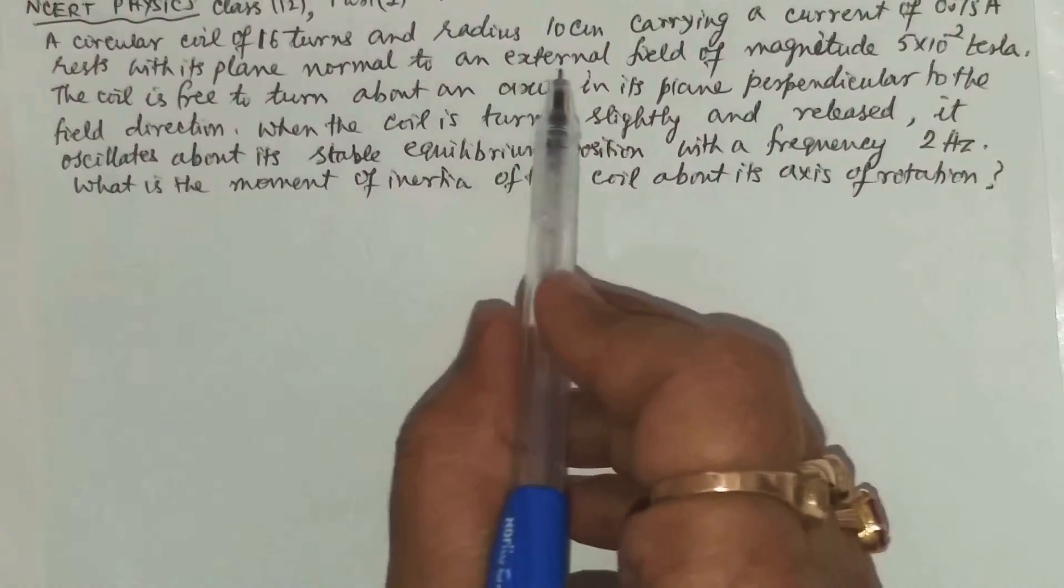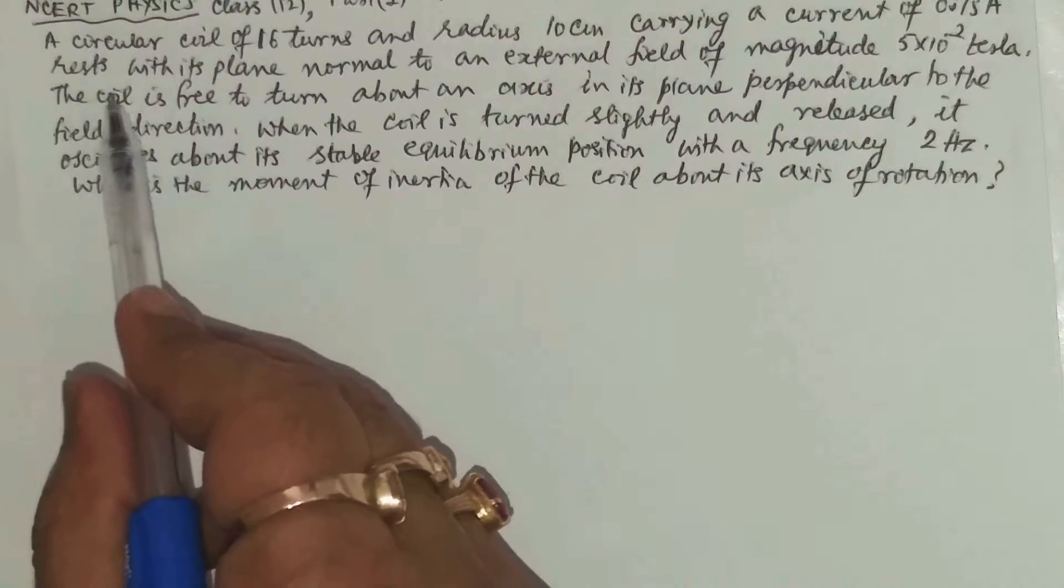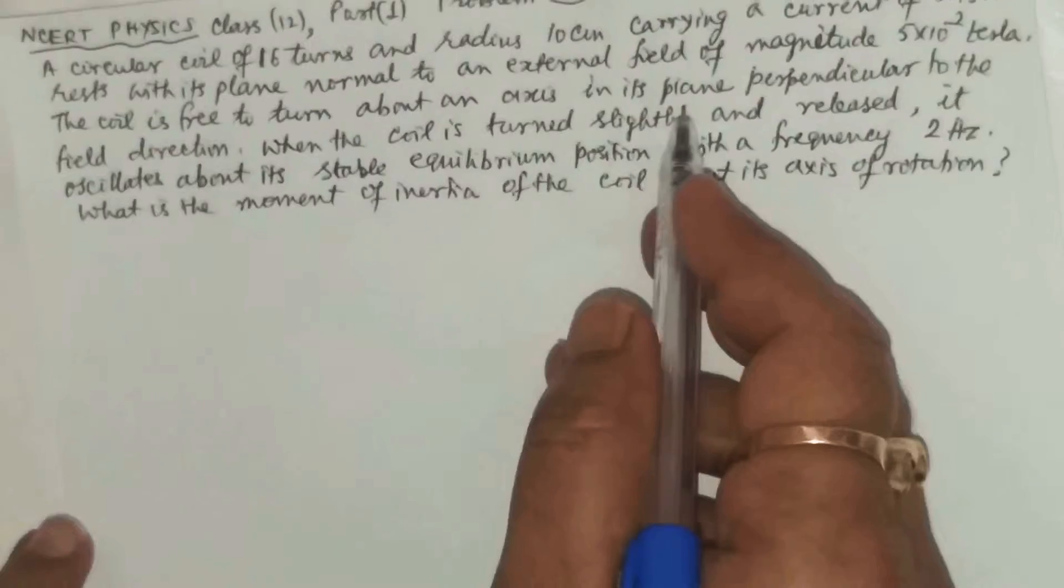A circular coil of 16 turns and radius 10 centimeter carrying a current of 0.75 ampere rests with its plane normal to an external magnetic field.